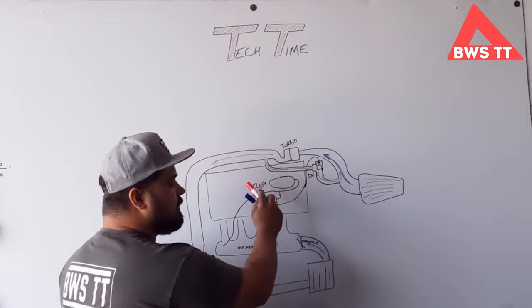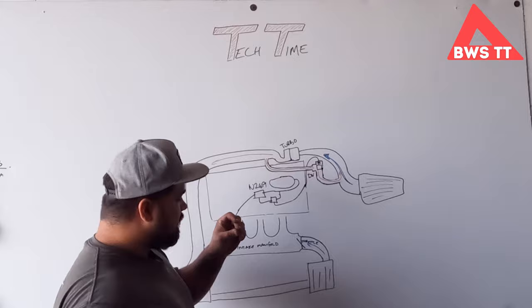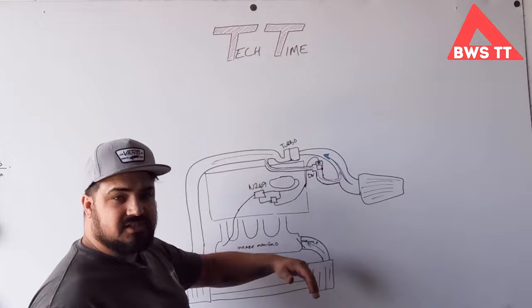So as you take your foot off the throttle, within a split second, the ECU has activated this valve before it closes this. So there's no split second of build up before it releases it.